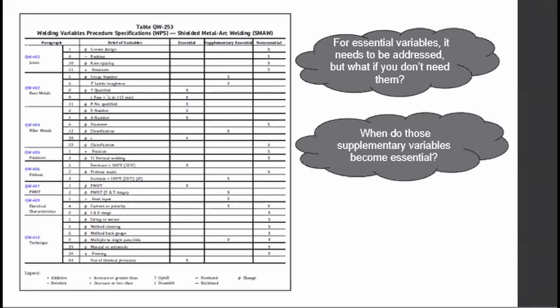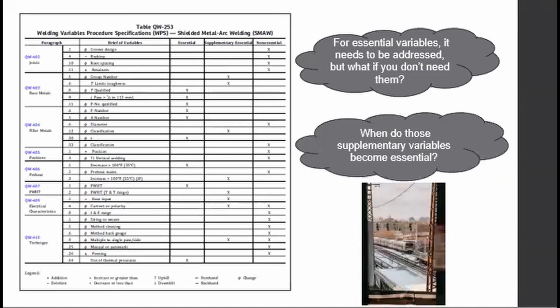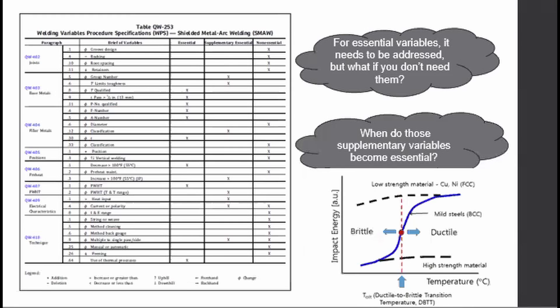When do supplementary variables become essential? These supplementary variables become essential when impact tests are required per code. A typical instance where impact tests are required is when welding in sub-arctic temperatures, where the ductile-to-brittle transition temperature can be reached. This is where impact tests will be deemed necessary to ensure weld quality and soundness — soundness being the freedom from imperfections of the weld.